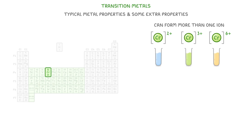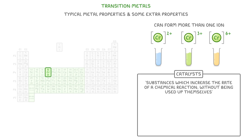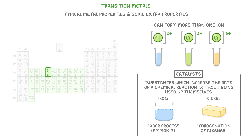The most important practical feature of transition metals is that they make very good catalysts, which is an important term to remember. We can describe a catalyst as a substance which increases the rate of a chemical reaction without being used up itself. For example, you'll see later in the course that iron is an important catalyst in the Haber process, which is used to make ammonia, while nickel is used in the hydrogenation of alkenes, which is used to make margarine.